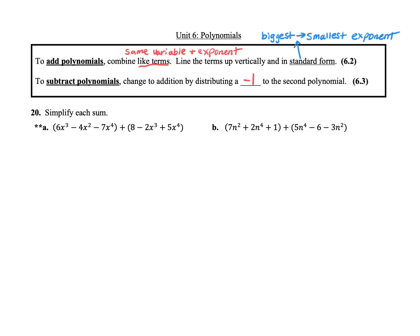In our first problem, we're going to simplify a sum. Notice how there's a plus sign in between the parentheses. Do not do a box for this — we're not multiplying, we are adding. And when we add, we just need to combine the like terms. Here we have 6x to the third minus 4x squared minus 7x to the fourth, and we want to add that with 8 minus 2x cubed plus 5x to the fourth.